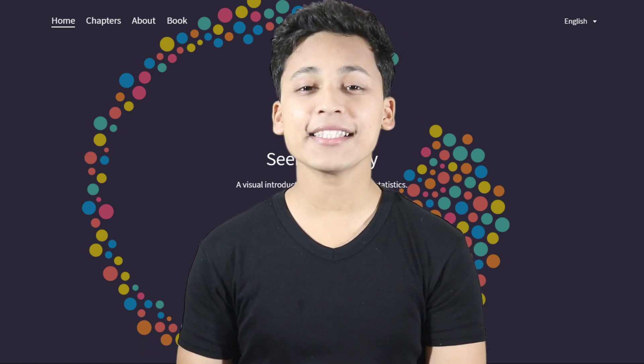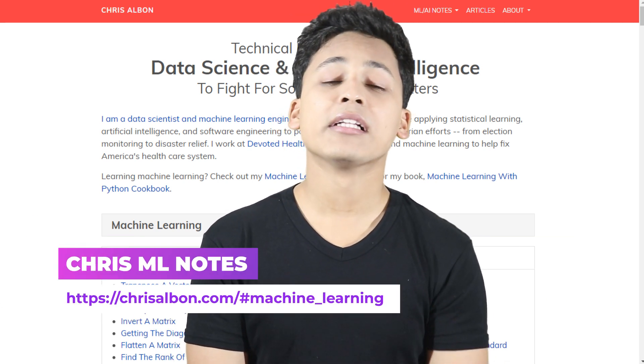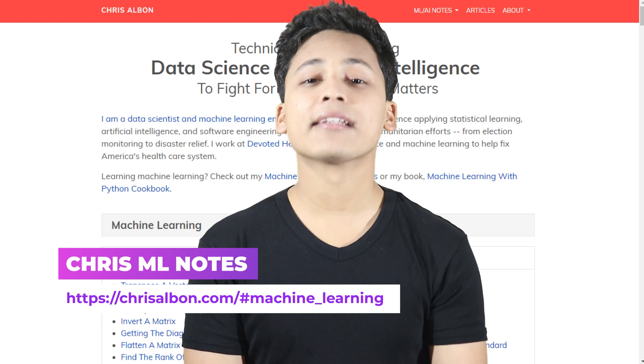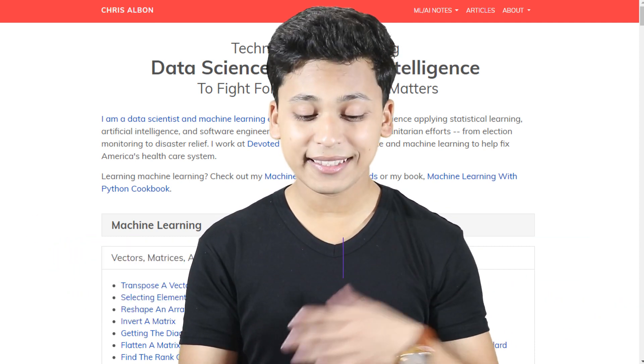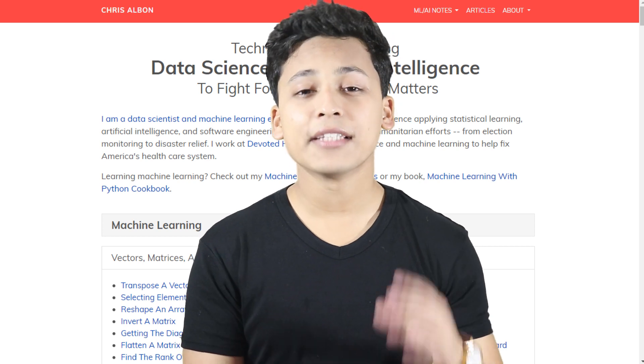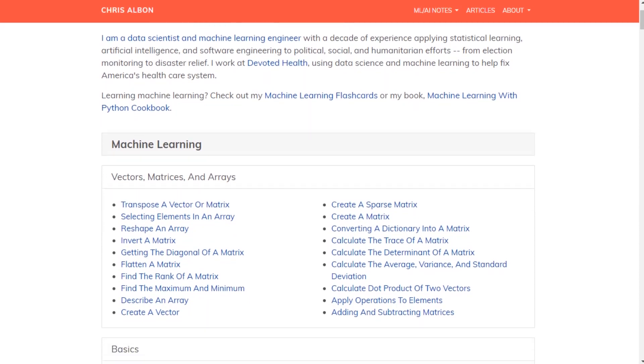So that was the first one. The second one is chrisalvin.com/machine-learning. This is a website that may not be cool like Seeing Theory but this is a website that has a repository for all the codes that you need for machine learning projects.